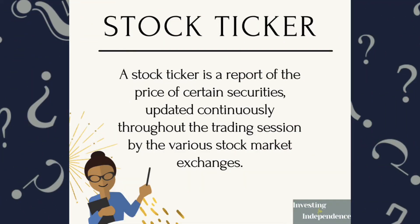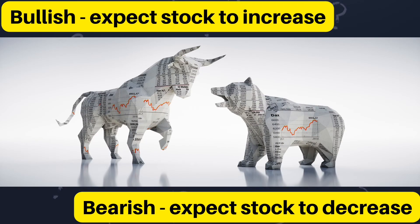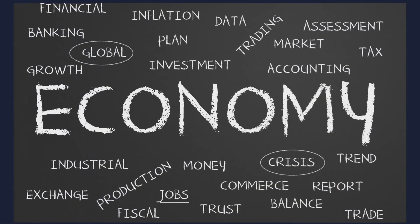Next up is a stock ticker. A stock ticker is a report of the price of certain securities updated continuously throughout the trading session by the various stock market exchanges. So not only will you see the stock symbol, you will also see the fluctuation of its price. The price can go up or it can go down. Bullish means it's expected to go up; bearish means it's expected to go down. Those are two terms that you will hear frequently as an investor.